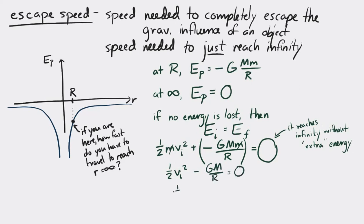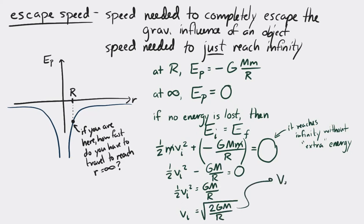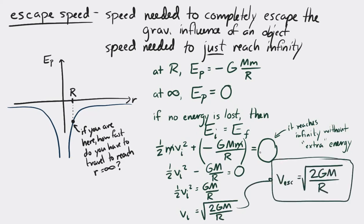To be clear: G is the gravitational constant, M is the mass of the object you're trying to escape (often a planet or star), and r is the distance from the center of that planet at the beginning.